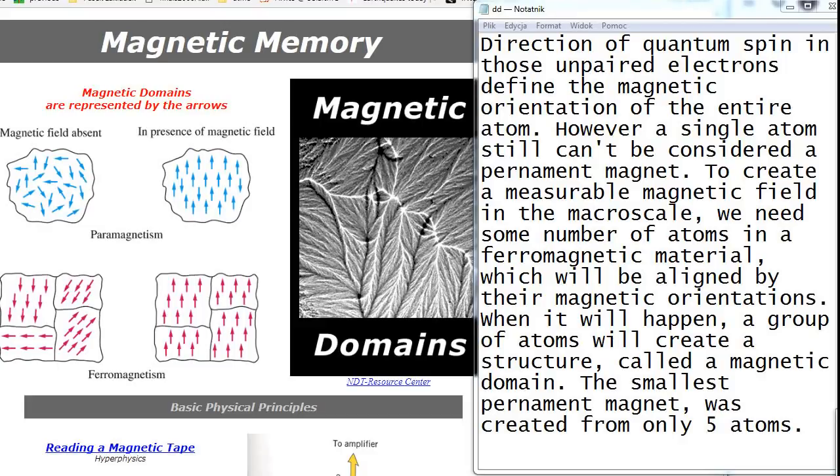However, a single atom still can't be considered a permanent magnet. To create a measurable magnetic field in the macro scale, we need some number of atoms in a ferromagnetic material which will be aligned by their magnetic orientations. When it will happen, a group of atoms will create a structure called a magnetic domain. The smallest permanent magnet was created from only five atoms.